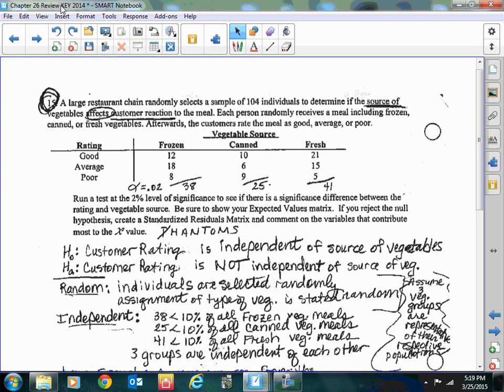All right, chapter 26 review number 15. This question is about the source of the vegetable - whether it's frozen, canned, or fresh - and then the rating that it achieved. So that is two variables: your rating variable and your source variable. So it's got to be a chi-squared test.